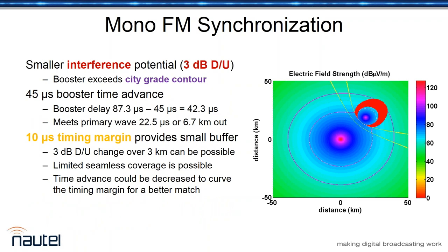For mono FM the situation improves greatly because the mush zone only requires 3 dB separation, making interference zones much smaller. However, the timing margin hasn't improved, so the only real gain is in reducing the interference zone area.